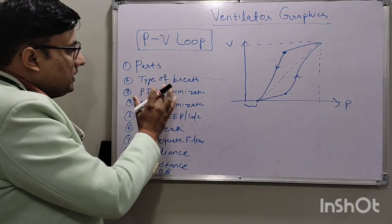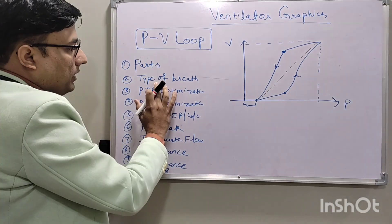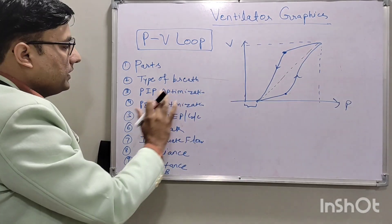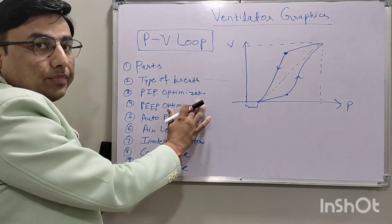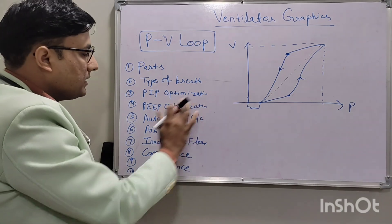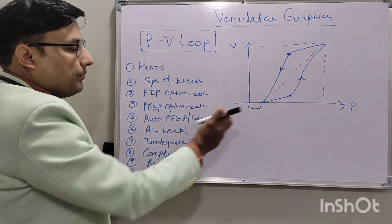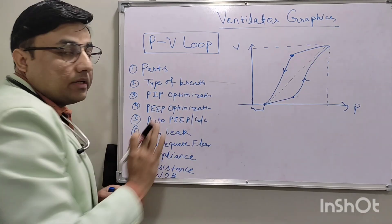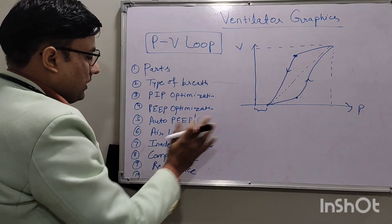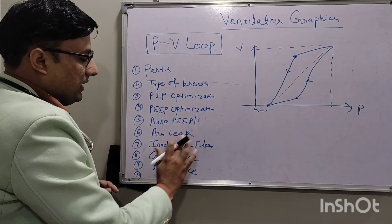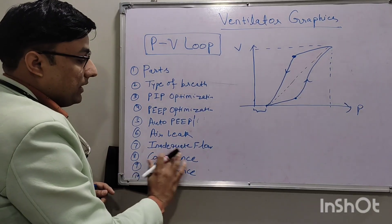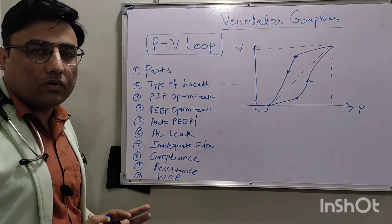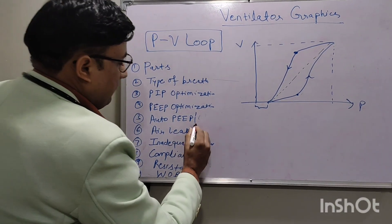In this part we will see what are the different parts of this PV loop. It will tell about type of breath — whether it is triggered or untriggered. We can optimize the PIP, avoid over-distension, optimize the PEEP, see if auto-PEEP is generating, detect air leak or air trapping, assess inadequate flow, compliance, resistance, and work of breathing.